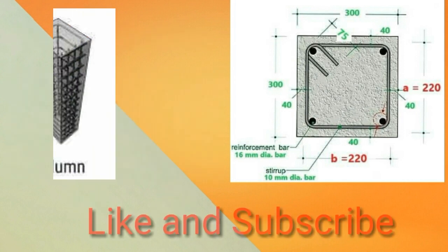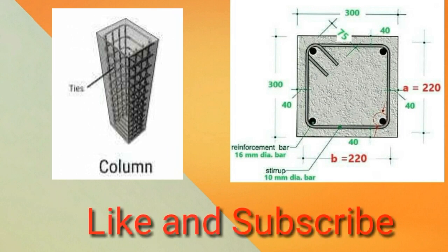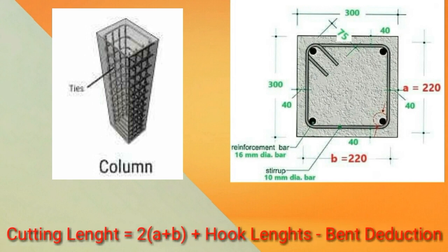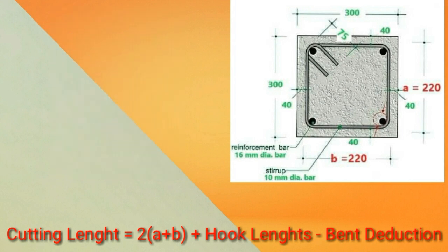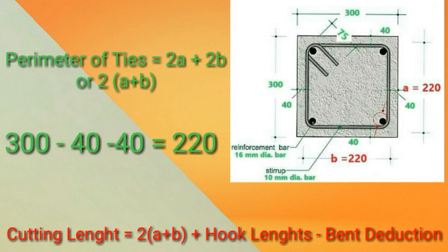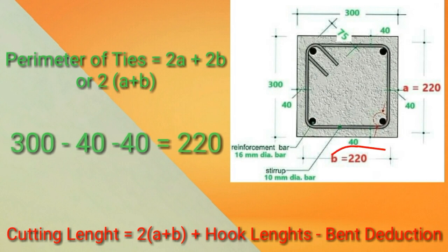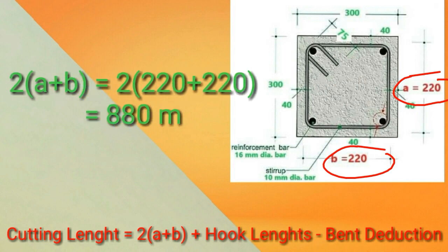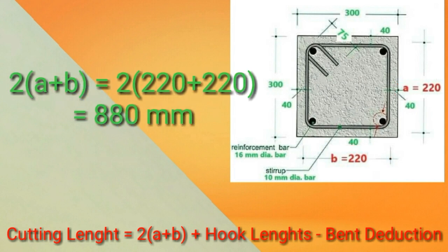We have already discussed the ACI codes connected to our column. Now let's go to the formula for the cutting length of our ties. Cutting length is equal to 2 times (a plus b) plus hook lengths minus bend deductions. If we examine carefully, 2 times (a plus b) is the perimeter of our lateral ties. If we subtract the concrete cover at both ends on one side, it gives us 220 millimeter. Therefore, 2 times (a plus b) is equal to 2 times (220 plus 220), which equals 880 millimeter.